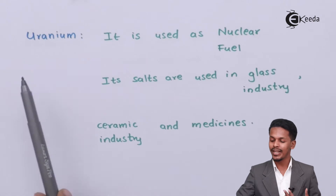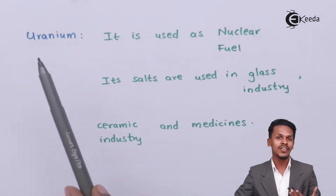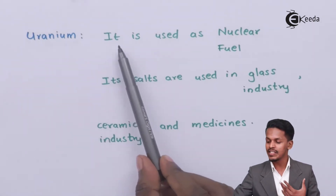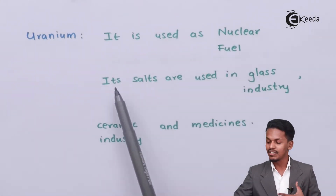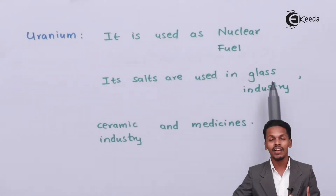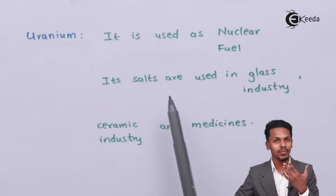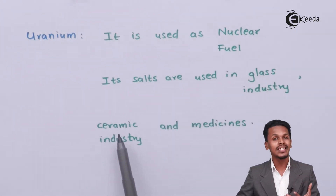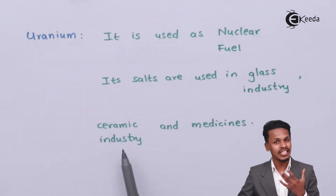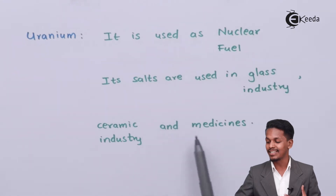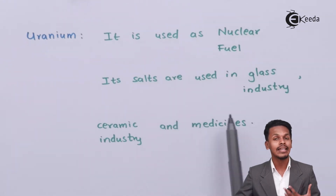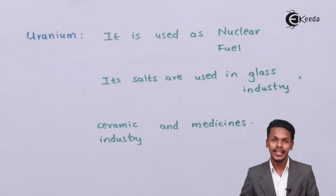The next one is uranium, and obviously we understand that it is used as a nuclear fuel. Its salts are used in glass industries to impart color. It is also used in ceramic industries as well as textile industries, and it is also used in medicines.